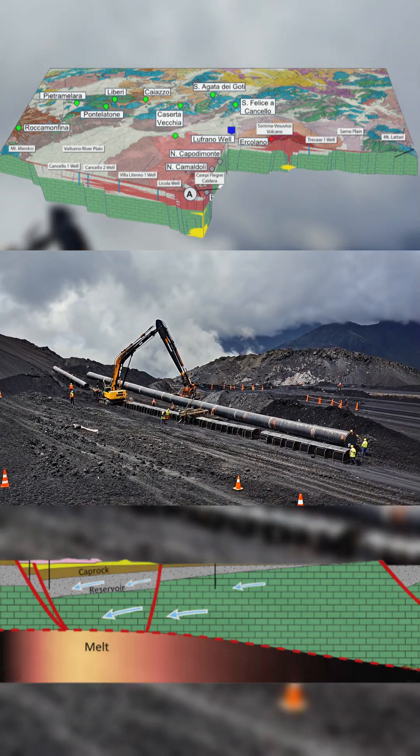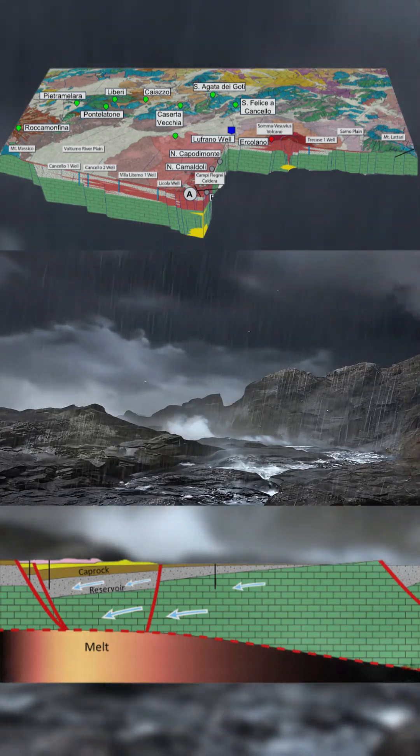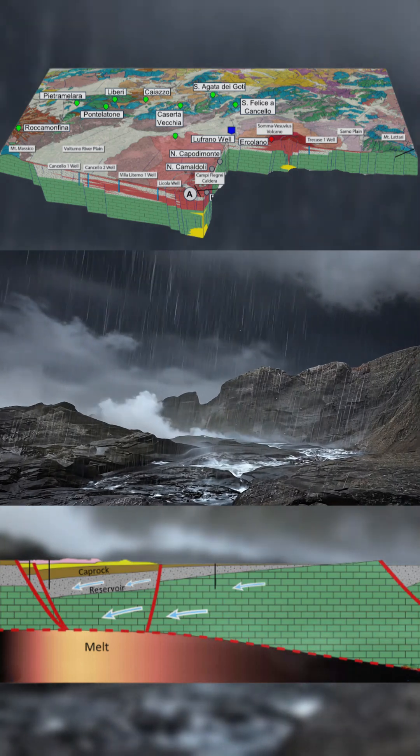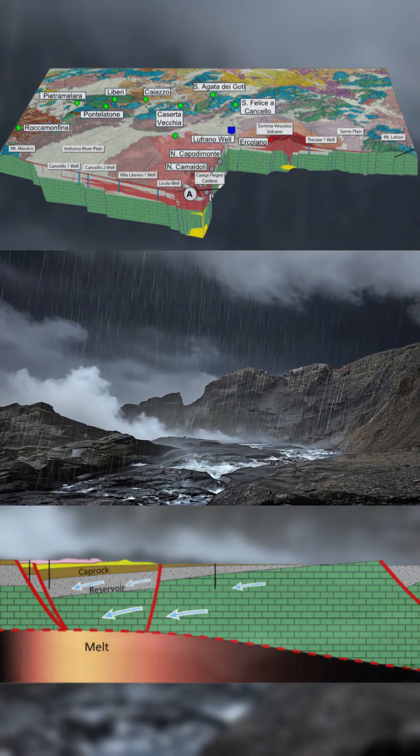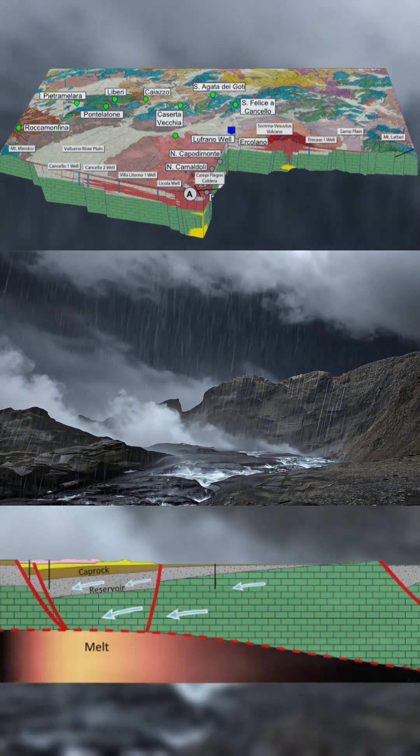This is not a volcano on the verge of lava eruption. It's something harder to see coming and potentially just as catastrophic. Go to abovethenormnews.com for the full story and a direct link to the original Science Advances paper.